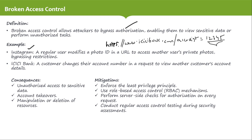This is Broken Access Control — being able to view sensitive information by bypassing authorization. Another example: a customer changes their account number in a request to view another customer's account details. This is essentially the same concept demonstrating unauthorized access through parameter manipulation.